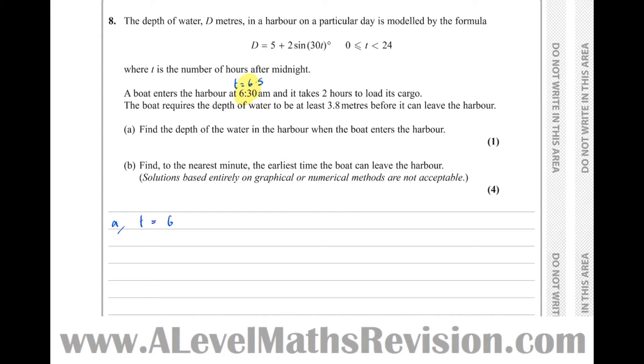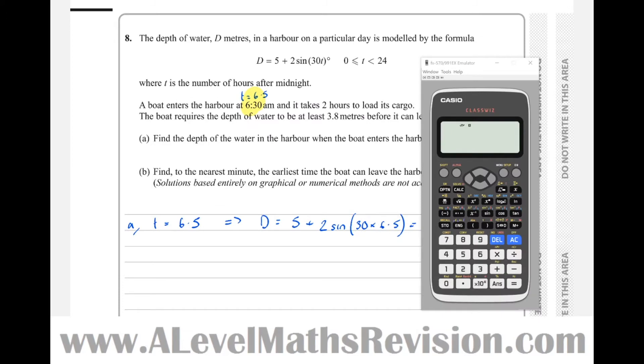For part (a), we're going to let t equal 6.5, and that's going to give us the depth when it enters the harbor, which means d equals 5 plus 2 times sine of 30 times 6.5. Let's put that in the calculator, making sure our calculator is in degrees mode. I can see mine's in radians because the little box has an R in it, so I want to put that in degrees mode: shift, then setup, angle, unit, degrees.